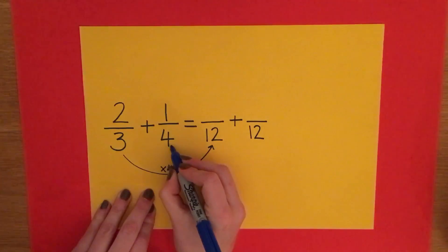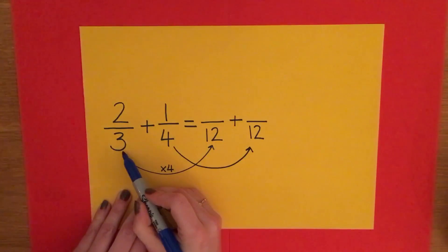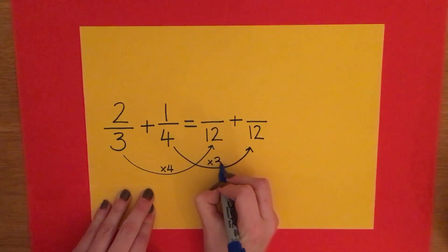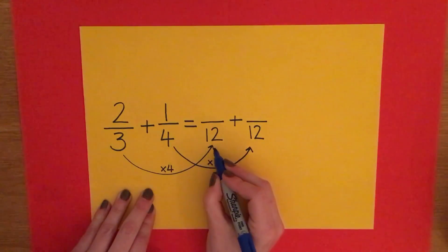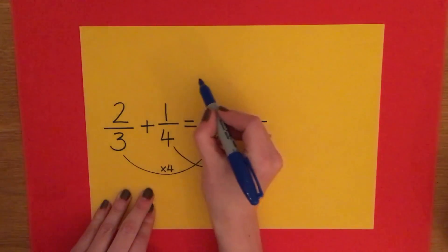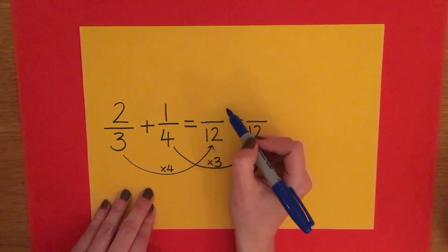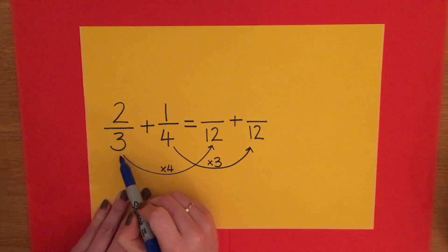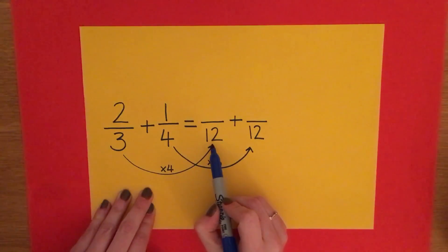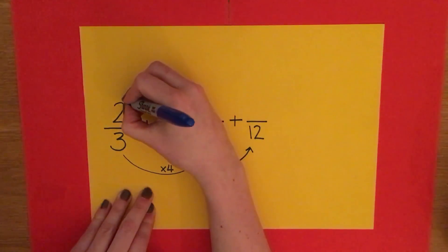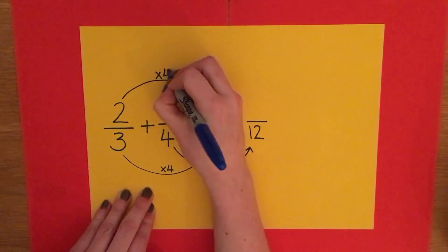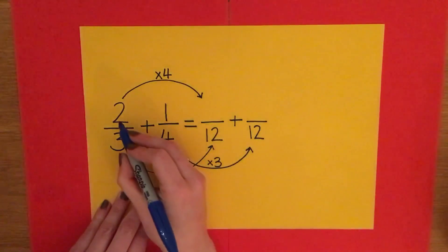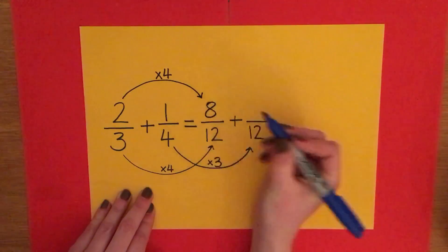And to go from the quarter to so many twelfths I need to times it by my other denominator. Now whatever you do to the bottom when you do fractions you have to do to the top. So to go from the three to the twelve I multiplied it by four, which means to go from the two to get an equivalent fraction I also need to multiply it by four. So two lots of four is eight.